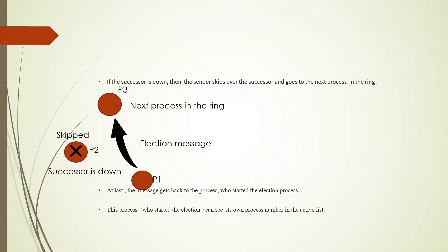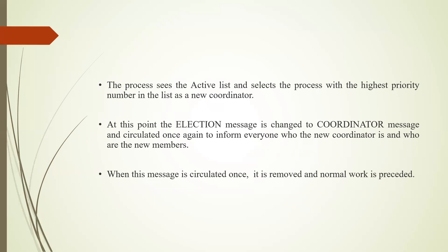At last, the message gets back to the process that started the election. That originating process sees its own process number in the active list, examines the list, and selects the process with the highest priority number as the new coordinator. At this point, the election message is changed to a coordinator message and sent around once again to inform everyone who the new coordinator is and who the new members are.